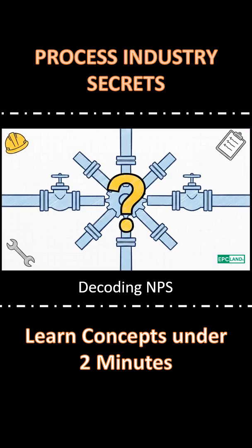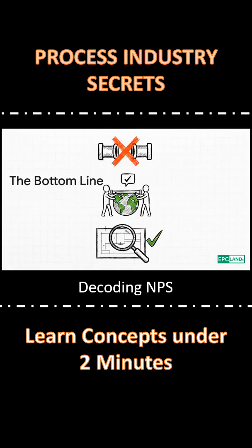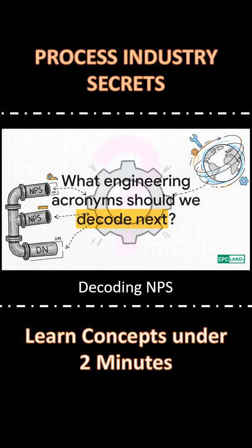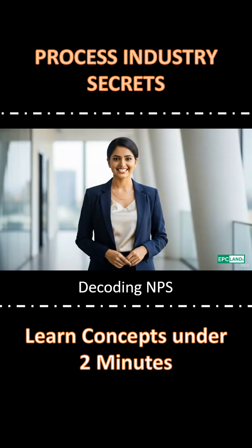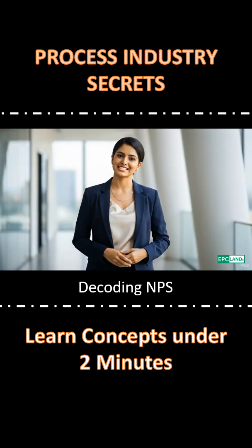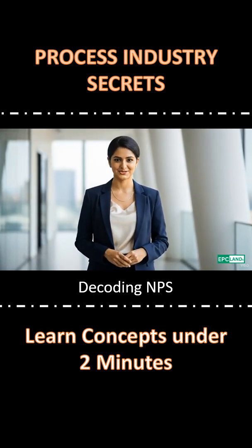So why is getting this simple translation right so critical for your work? It prevents huge ordering mistakes and helps global projects run nice and smooth. Understanding this stuff isn't optional — it's the foundation of safe and efficient engineering. So there you have it: NPS versus DN decoded. What other engineering acronyms should we break down next? Hope you liked the content, and don't forget to check out 2000-plus videos on EPC Land's YouTube channel. Happy learning!